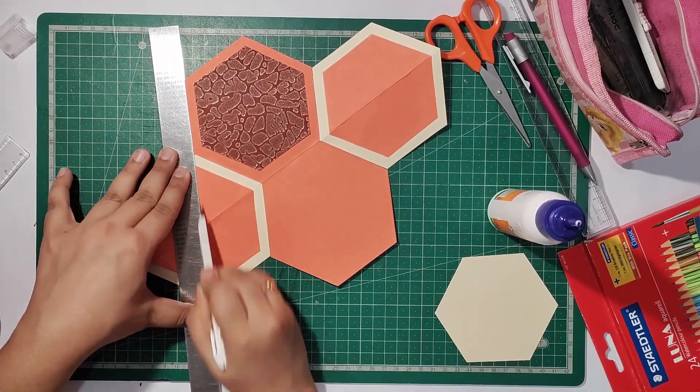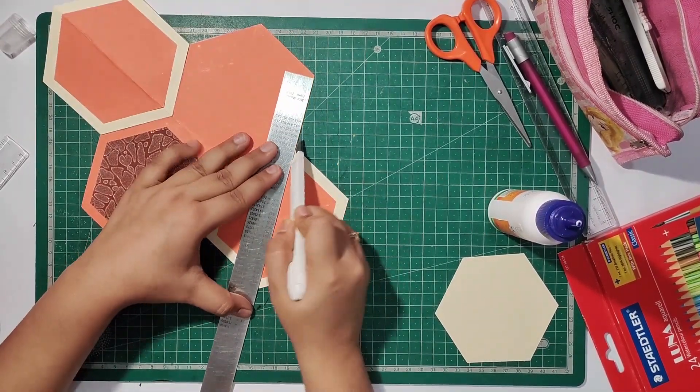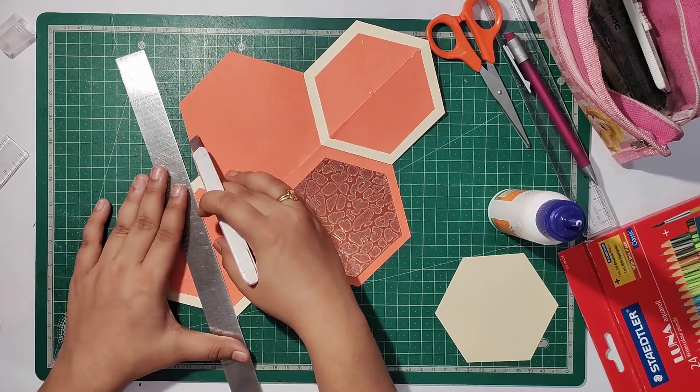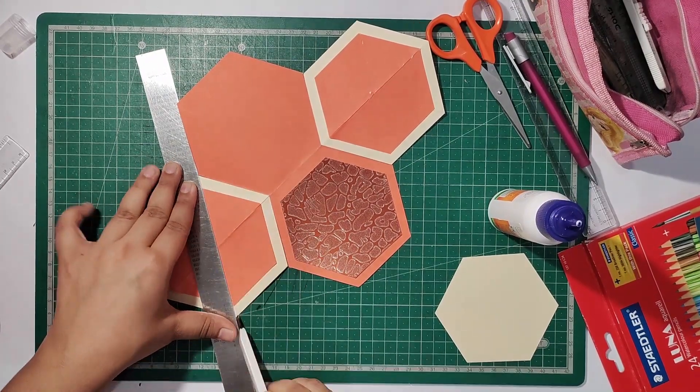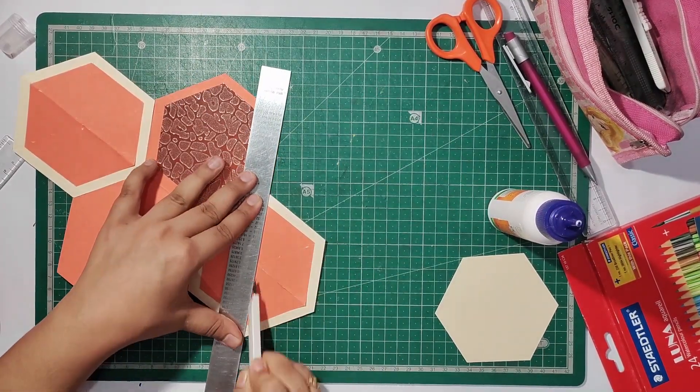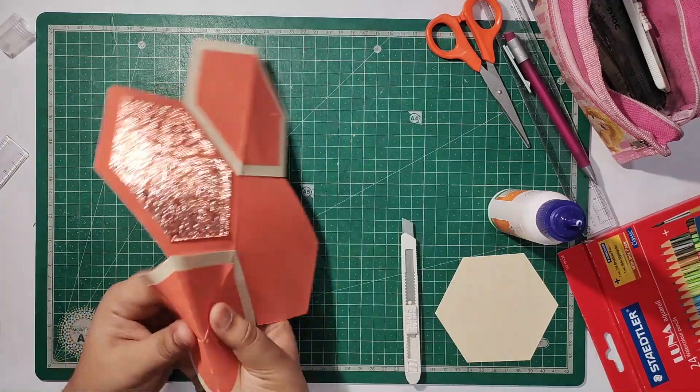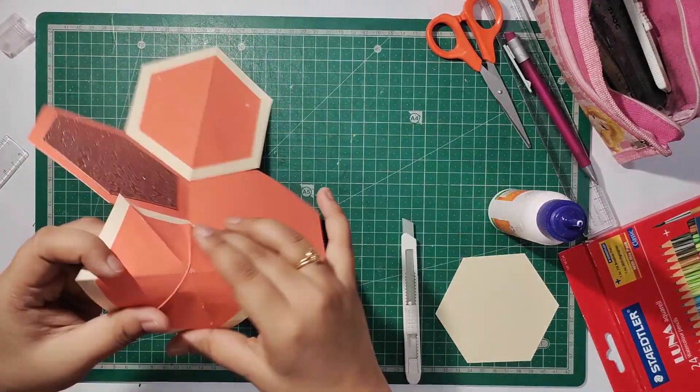In the second technique, we follow the same card cutting process. We will attach hexagons on both sides of the card, fold it and stick it. This will create a 3D effect.